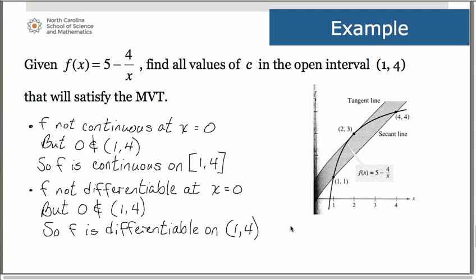Our two conditions are met so now we can go ahead and try to find the c that is being sought. So we'll need to find the derivative. Here's the original function. The derivative simply will be 4 over x squared.